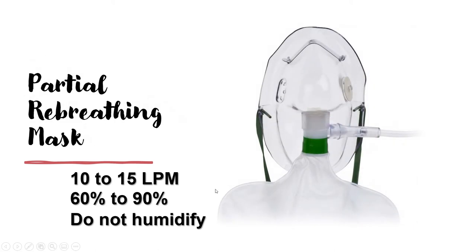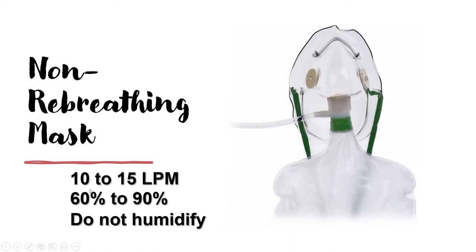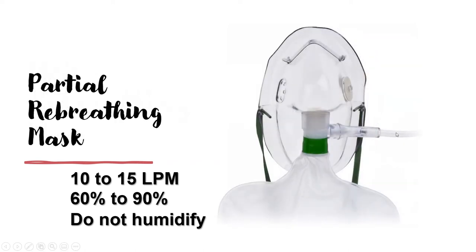Do not connect a re-breathing mask — whether partial or non-rebreathing — to a humidifier. The minimum flow rate for re-breathing masks is 10 liters per minute, and if you connect a bubbler humidifier at that flow rate, the water will come out of the bubbler and reach the oxygen tubing. This water may reach the reservoir bag, and water in the tubing or reservoir bag decreases the FiO2 by displacing the oxygen inside.